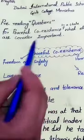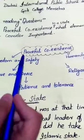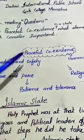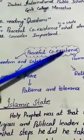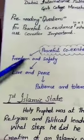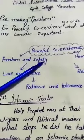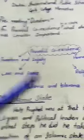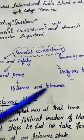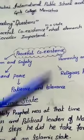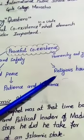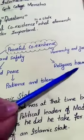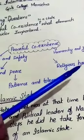I think that your answer may be: for a peaceful coexistence, freedom and safety, love and peace, passion and tolerance, humanity and justice, and religious harmony are important.